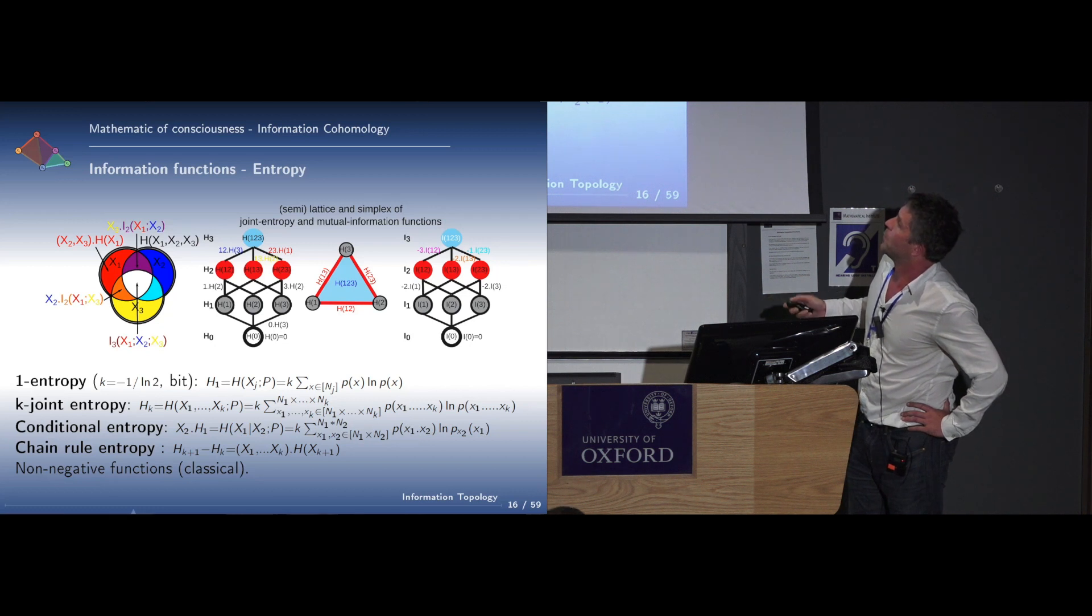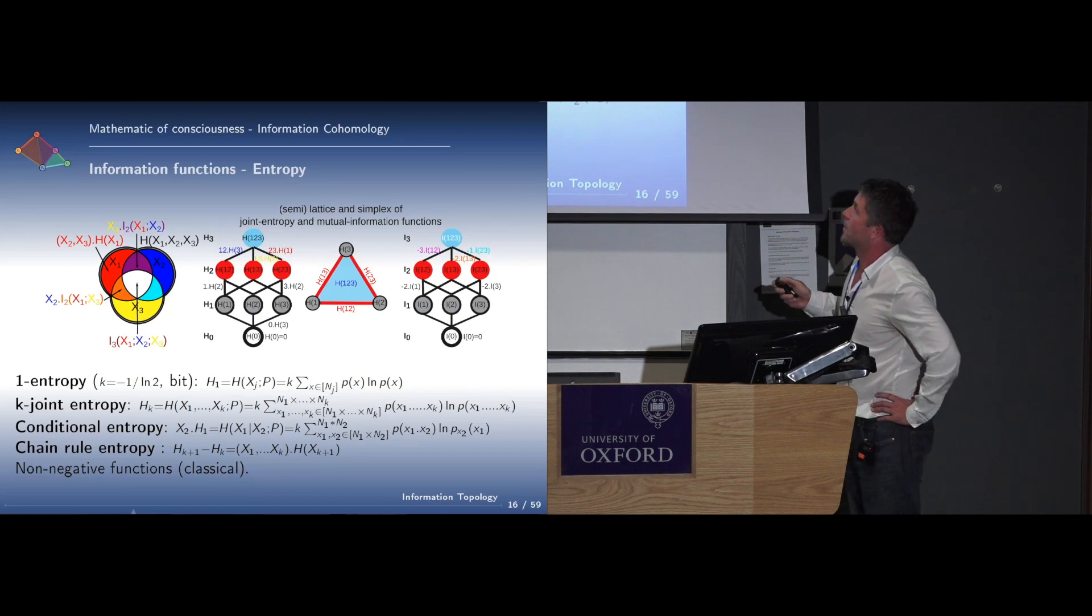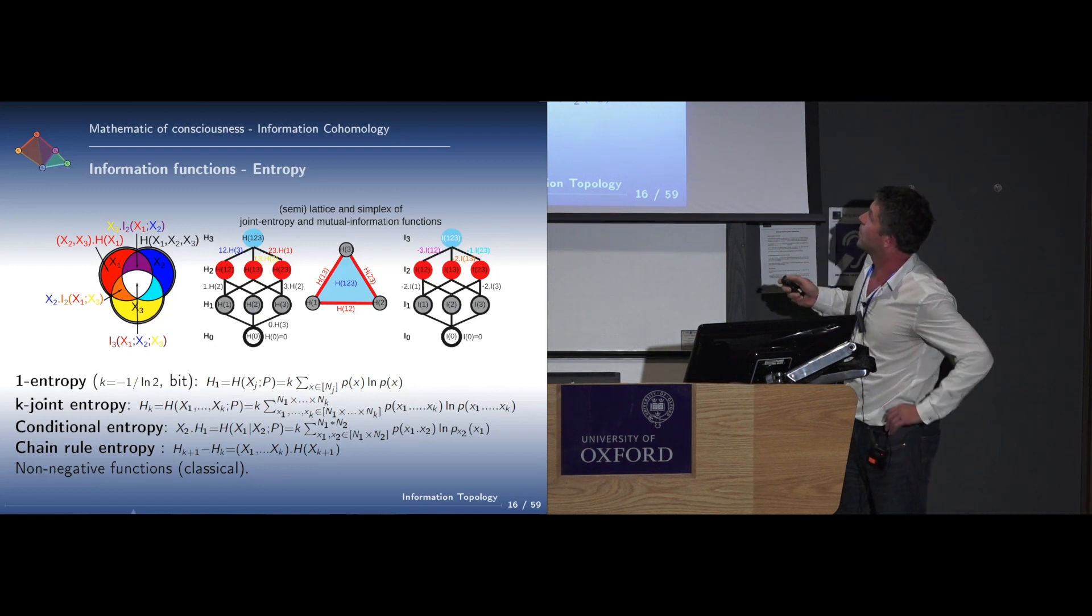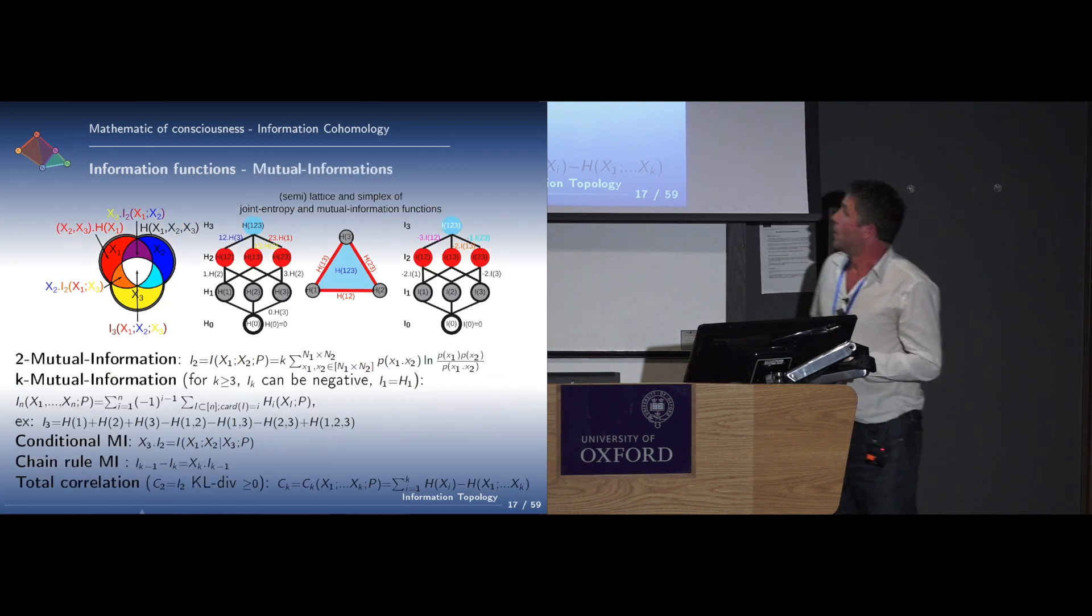If you don't know them, they are usually seen as a Venn diagram, looking at all the unions, which can also be seen as the semilattice of unions presented here. You have the entropy of the marginals, the entropy of pairs, of triplets, and so on, which can also be seen as a simplex function with the same combinatorial aspect.